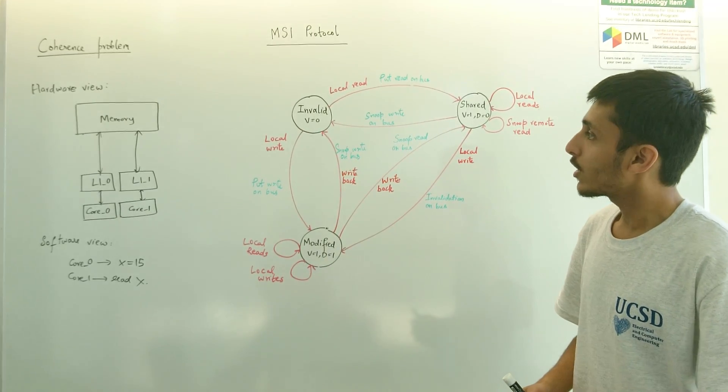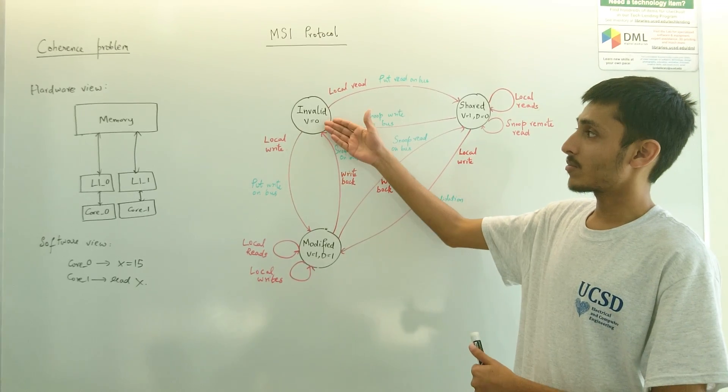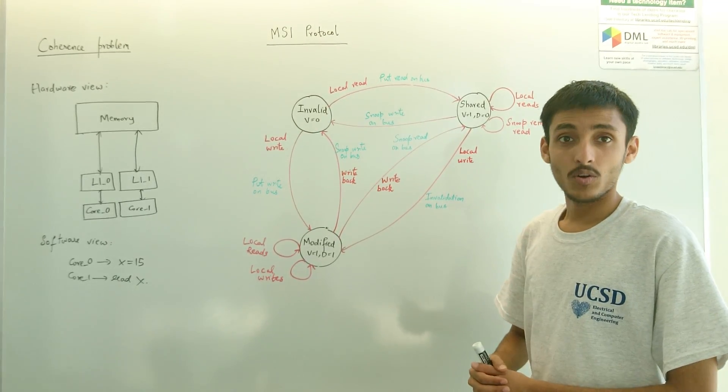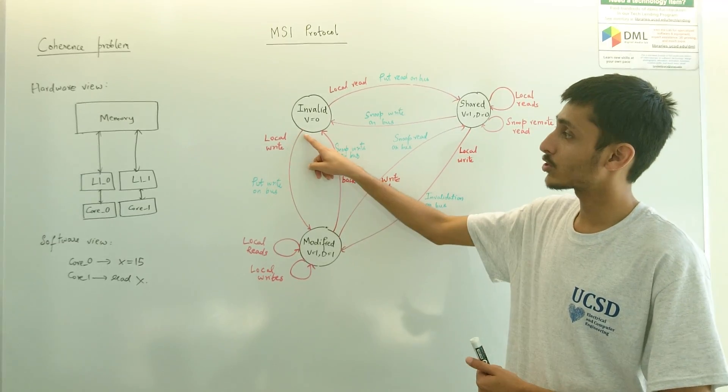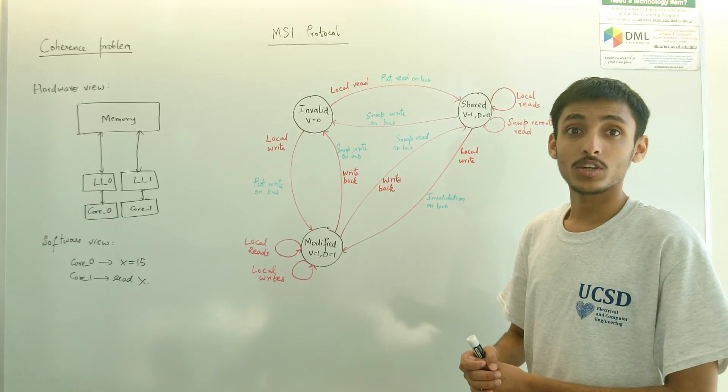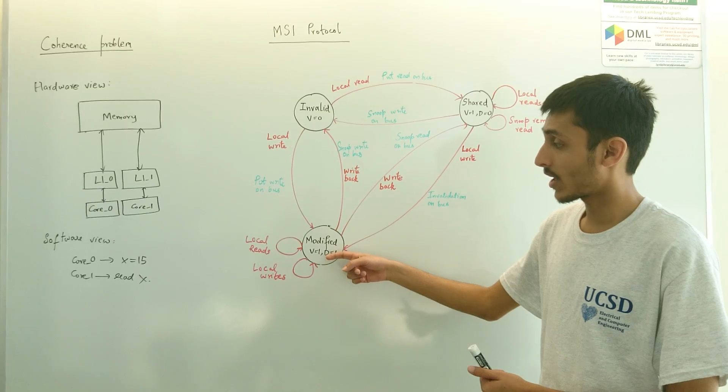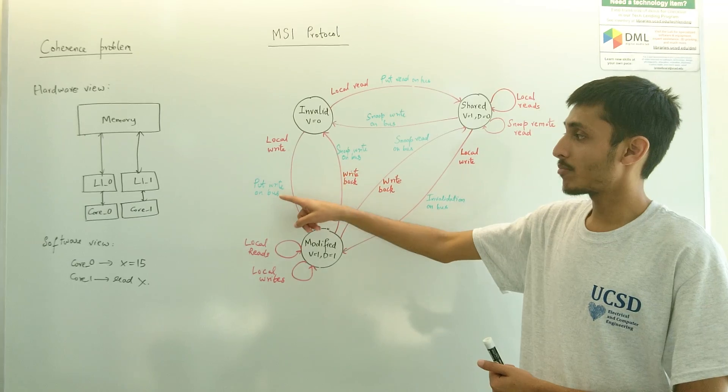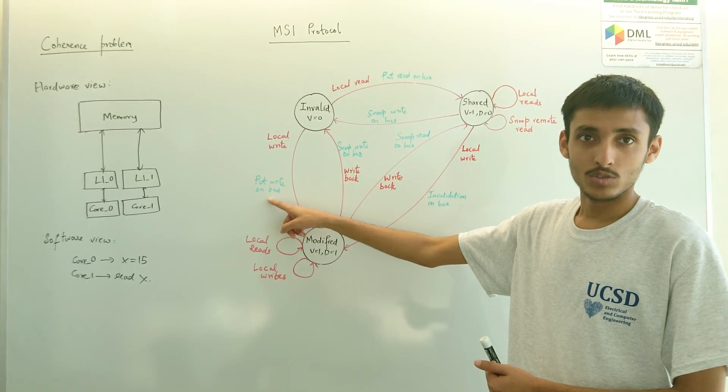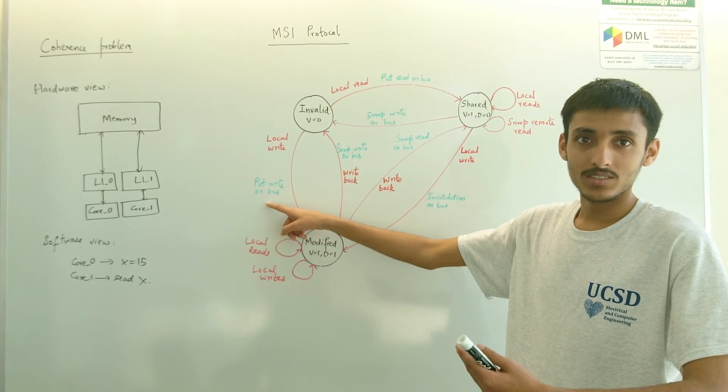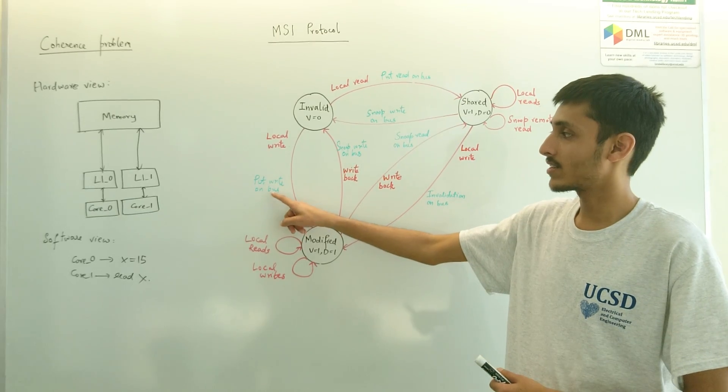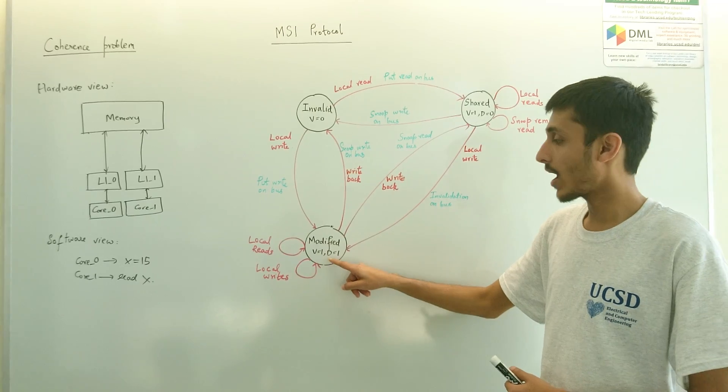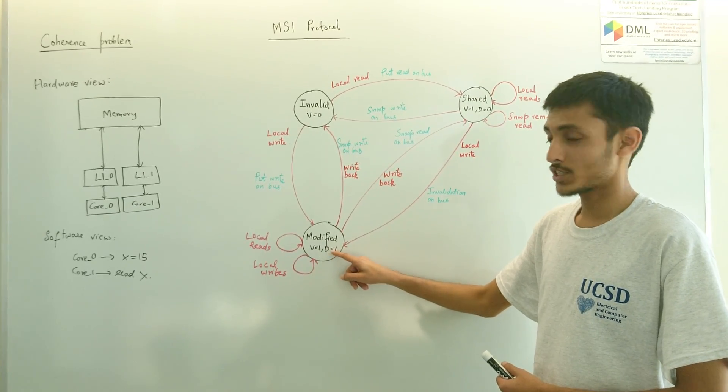However, if there is another line from another processor having an invalid state, which means that the valid bit is 0 and it does not possess the line, and it wants to do a local write, it has to ensure it pulls the latest copy of the line from modified state to itself. How that is done is the line basically puts a write on the bus, so that all this is a kind of broadcast, so that all the other cache lines can see that there is a write to this line, and it moves its line from an invalid to a valid state and a dirty state, because it has got the fresh line.